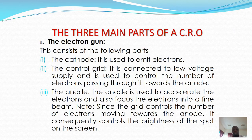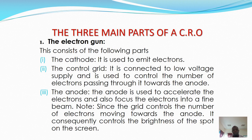The cathode ray oscilloscope has three main parts. The first is the electron gun, which consists of the following parts: the cathode, which is used to emit electrons; the control grid, which is connected to a low voltage supply and used to control the number of electrons passing through towards the anode; and the anode, which is used to accelerate and focus the electrons into a fine beam. Since the control grid controls the number of electrons moving towards the anode, it controls the brightness of the spot on the screen.